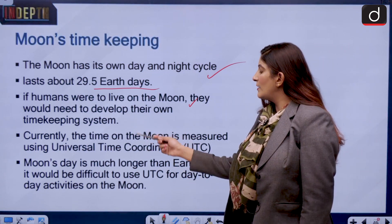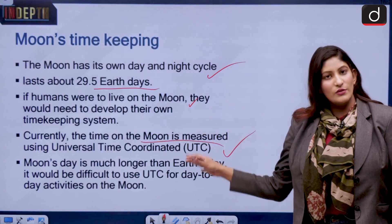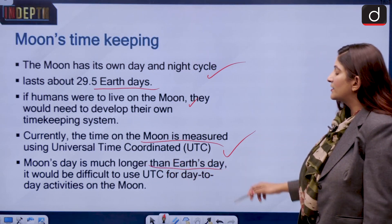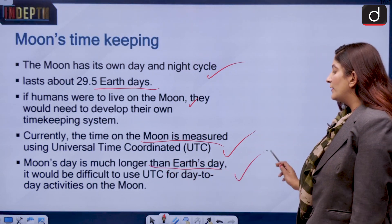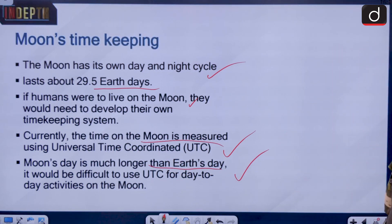Currently the time on the moon is measured using Universal Time Coordinated, which is also used for the earth. Moon's day is much longer than earth's day and it would be difficult to use UTC for day-to-day activities on the moon. That is why a different timekeeping system is being suggested.